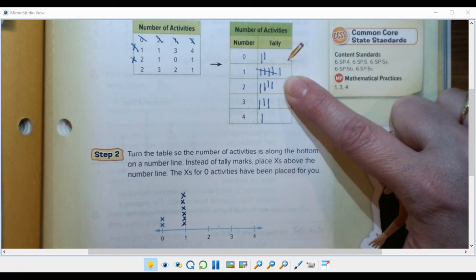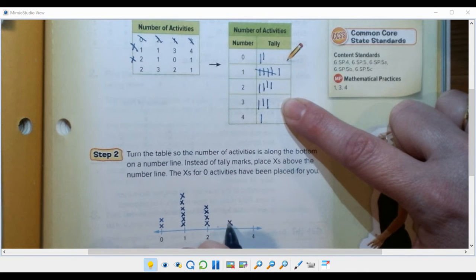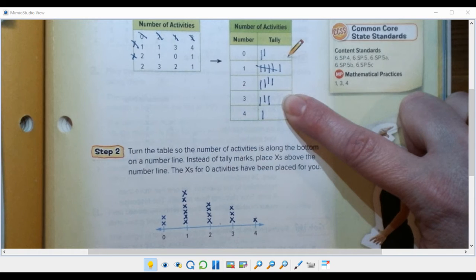On top of the number one we need to make four on top of the number two, three on top of the number three and just one x on top of number four.